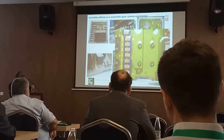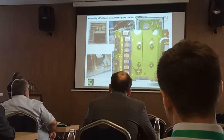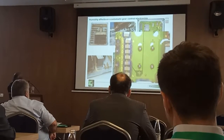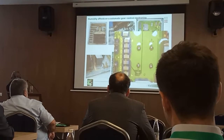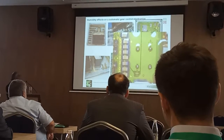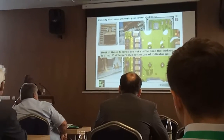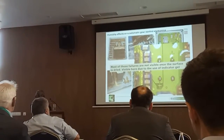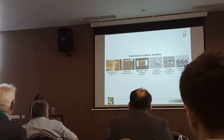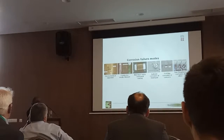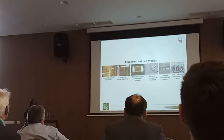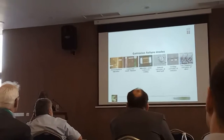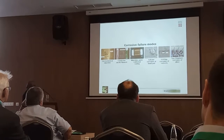Most of these failures are not visible because the surface dries out, but this is visible because we used an indicator gel in this case. You can also have many other failure modes depending on the material combination used within the circuit part, and also depending on the kind of environment. The electrochemical migration is one failure mode, but you can also have other failure modes.